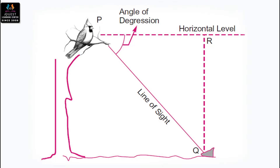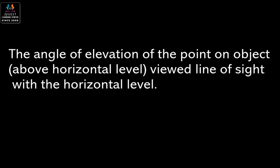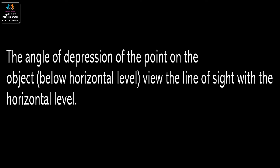Similarly, in this picture, PQ is the line of sight, PR is the horizontal level, and angle P is known as the angle of depression. The angle of elevation is the angle above the horizontal level when viewing a point on an object. The angle of depression is the angle downward from the horizontal level, as shown in this picture.